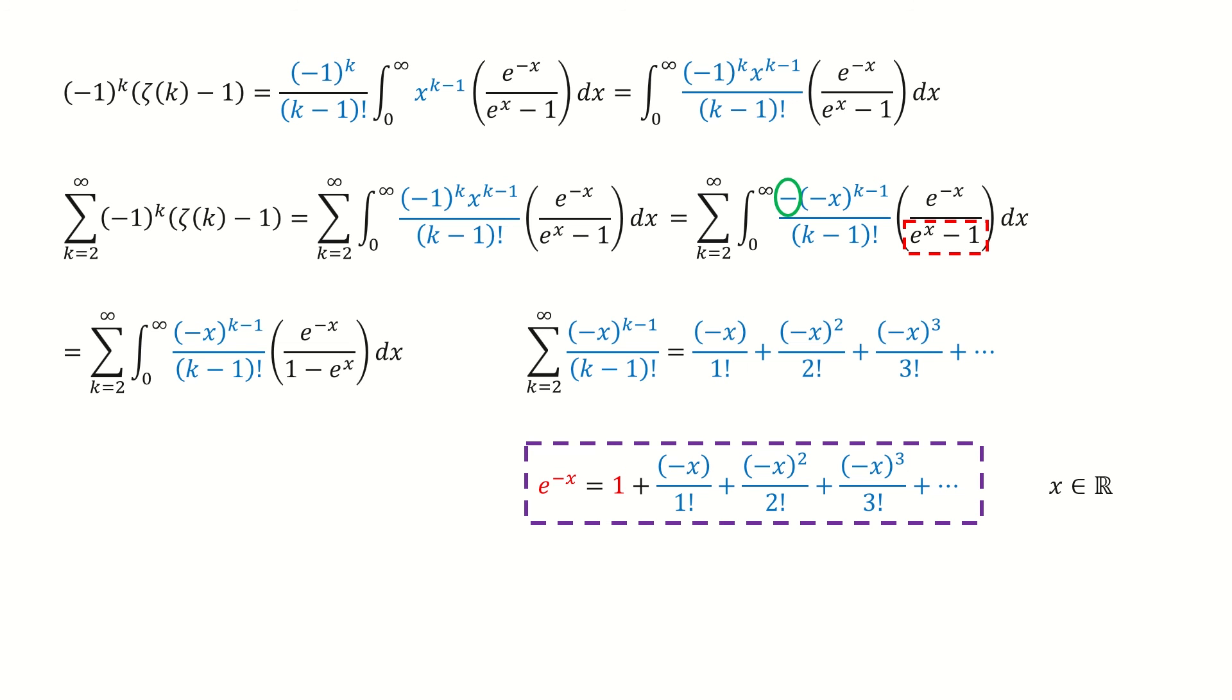If we compare them, we can find the above series is just equal to e to the negative x minus 1. As I mentioned just now, because this series is uniformly convergent for arbitrary real number x, we can switch the order for the integration and the summation.